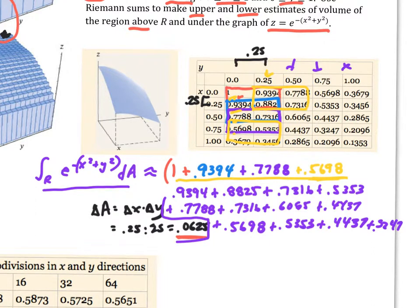What am I going to do with all these values once I put them in? Well I'm going to multiply them by 0.0625. So my estimate for the volume then becomes 0.68.